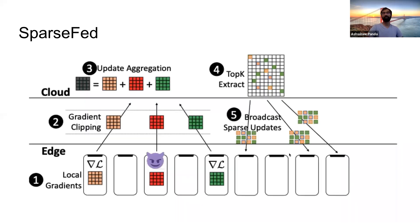This is a graphic of the SparseFed algorithm, which is a combination of global top-k sparsification, L2 norm clipping, and federated averaging. Devices compute local gradient updates, which can be the composition of several steps, and these updates are clipped to a specified norm. The server aggregates all these updates and then only uses the top-k coordinates to update the global model.